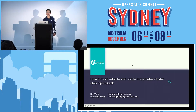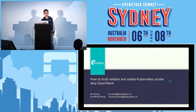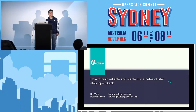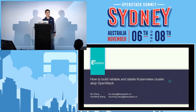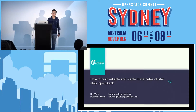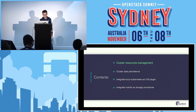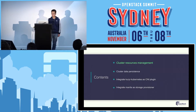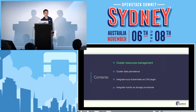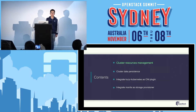Hello everyone. My name is [speaker] and welcome to my talk. As we know, Magnum can help to deploy a Kubernetes cluster on top of OpenStack. But have you ever run your applications on the cluster? There must be some problems waiting for you. So here, I'm going to share some operational experience about how to make the cluster more reliable and stable. I will give you some details and hope it could be helpful for you.